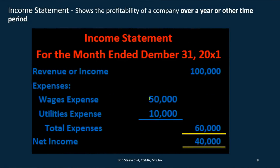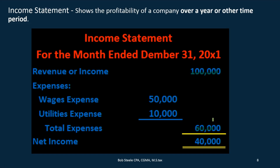The income statement shows the profitability of a company over a year or other time frame. The big thing to note is that it has a time frame — in this case the month ended, meaning December 1st to December 31st. Think of the income statement like running a race: it has to have a beginning and an end. If you ask someone how much money they make, they need a time frame — a year, a month, a pay period. We have revenue and expenses, and revenue minus expenses gives us our net income.